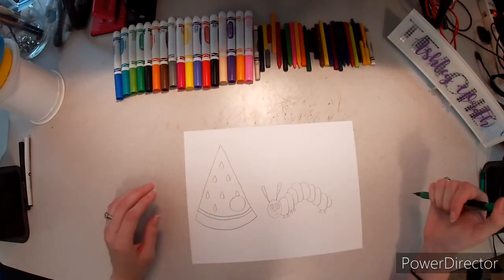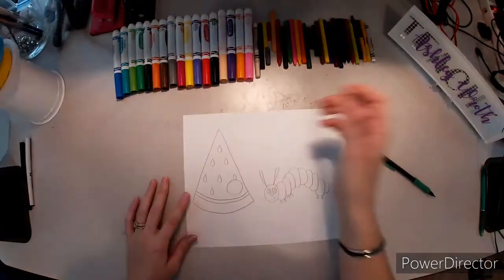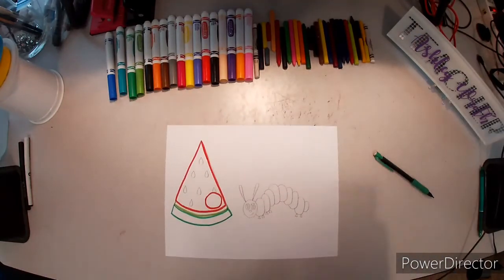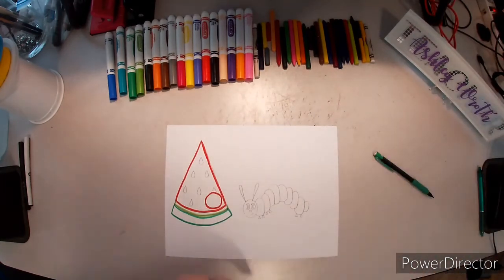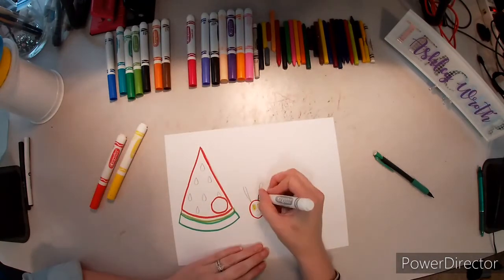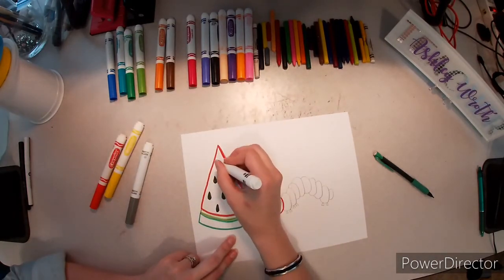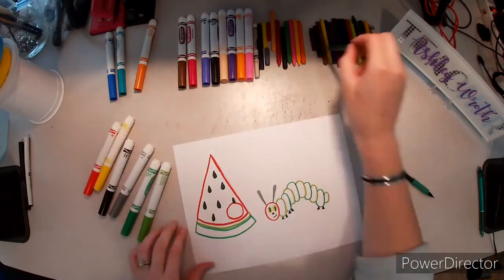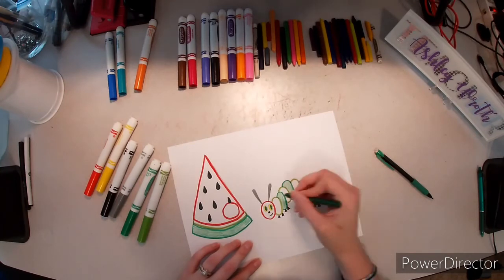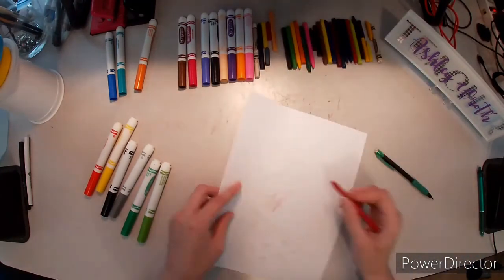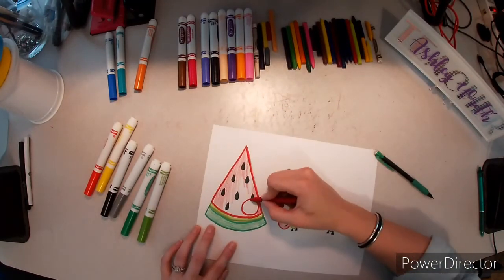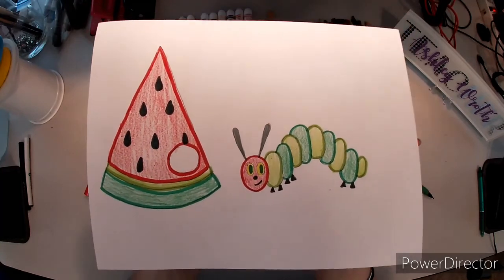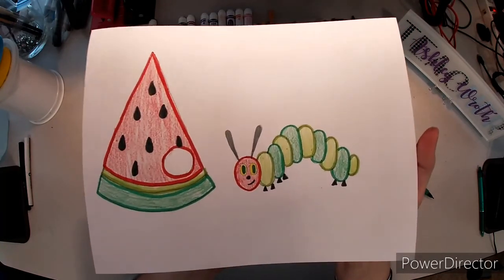Now, for the seeds, the seeds look like raindrops. So, we start pointy at the top and then we go around and back up. We're our hungry caterpillar and a watermelon. Now, we get to color it in. Okay, boys and girls, I had a lot of fun making my own very hungry caterpillar and watermelon slice and I hope you did too. I can't wait to see the pictures that you turn in. So, I'll see you next time.